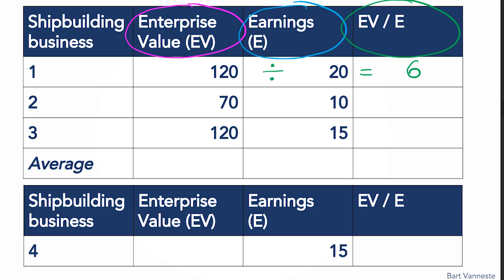We can calculate the same multiple for the other businesses. For business two: 70 divided by 10 equals seven. Likewise, for business three: 120 divided by 15 equals eight. The next step is, given these three multiples, we're going to calculate the average across them. The average of six, seven, and eight is seven. Now we know that on average, a shipbuilding business is worth about seven times its last year's earnings.